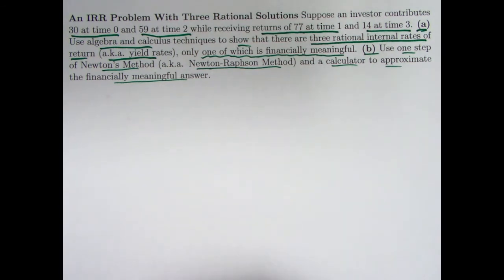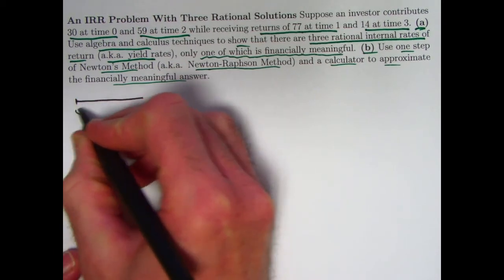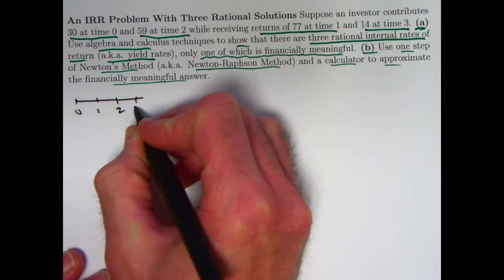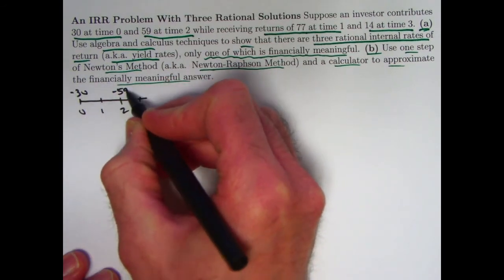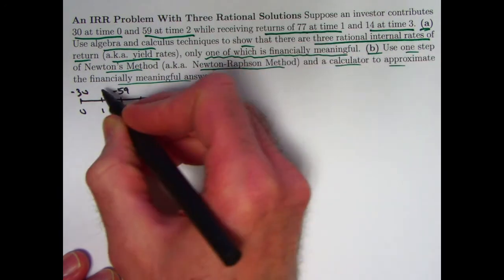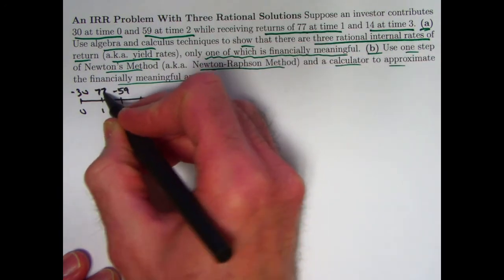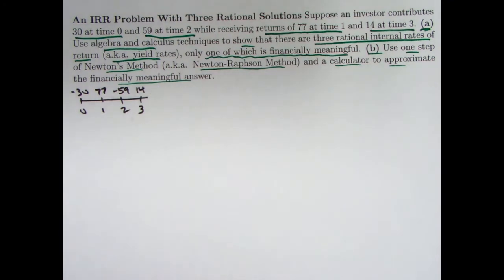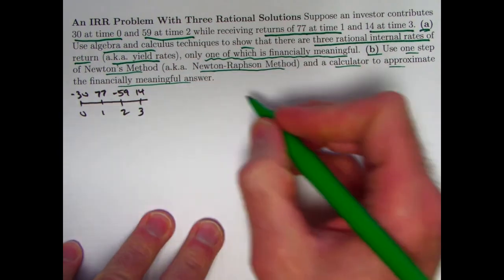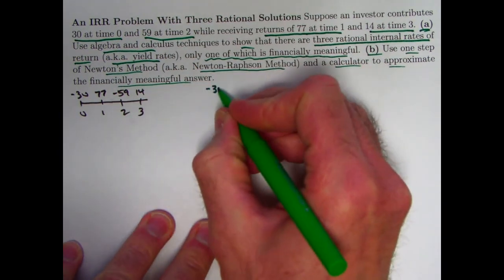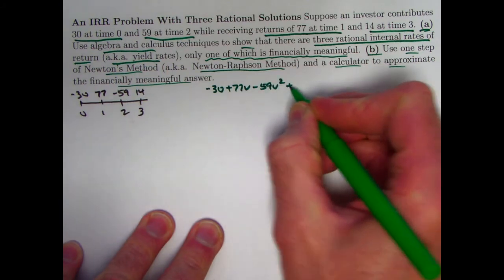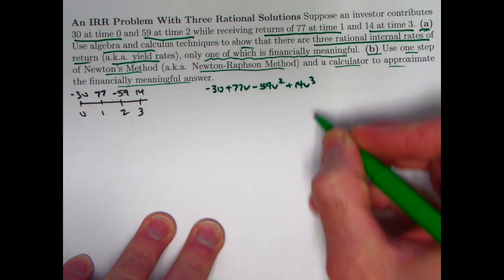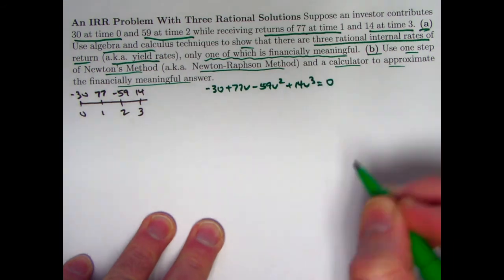Let's draw a quick timeline here. Times 0, 1, 2, and 3. We've got negative 30 at time 0 and negative 59 at time 2. Those are the contributions. Getting returns that are positive of 77 at time 1 and 14 at time 3. Therefore, the equation of value, thinking in terms of present values, would be negative 30 plus 77v minus 59v squared plus 14v cubed. A cubic. Set that equal to 0, solve for v.